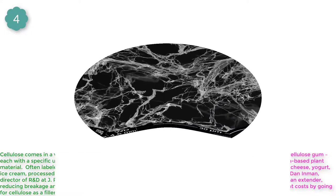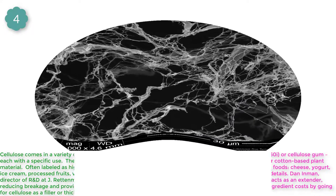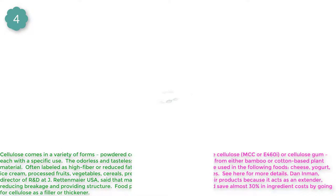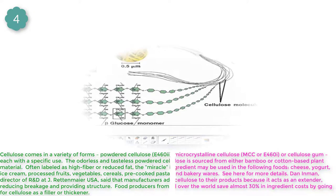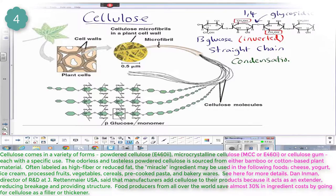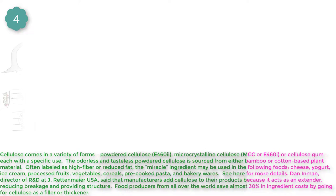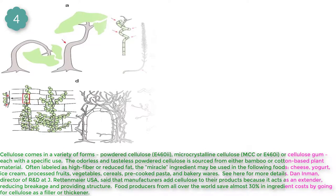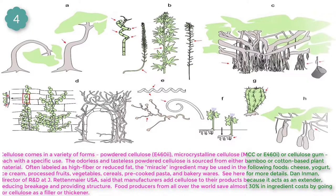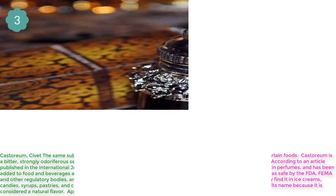Number 4: Cellulose. Cellulose comes in a variety of forms: powdered cellulose (E-462), microcrystalline cellulose (MCC or E-460i), and cellulose gum, each with a specific use. The odorless and tasteless powdered cellulose is commonly used as an additive.